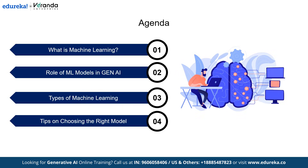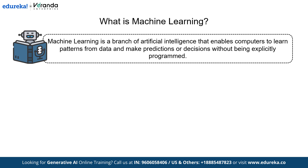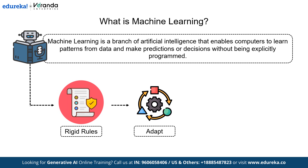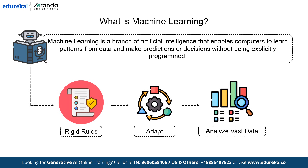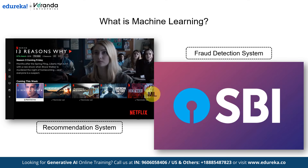Let's begin with our first question: what is machine learning? Machine learning is a branch of artificial intelligence that enables computers to learn patterns from data and make predictions or decisions without being explicitly programmed. Instead of following rigid rules, ML models adapt and improve over time by analyzing vast amounts of data. From personalized recommendations on Netflix to fraud detection in banking, ML powers countless real-world applications.